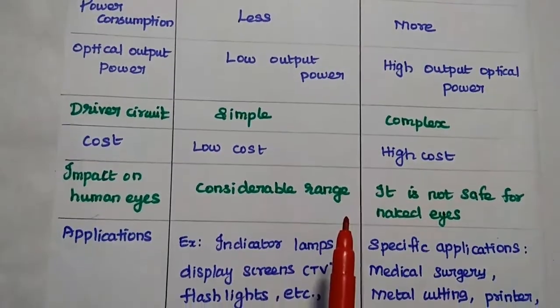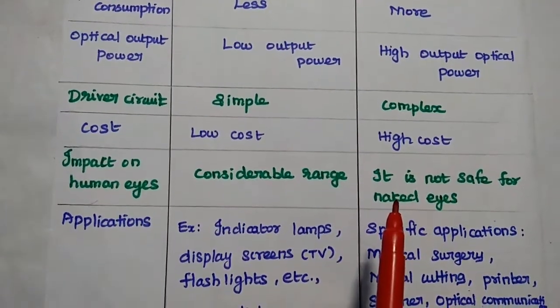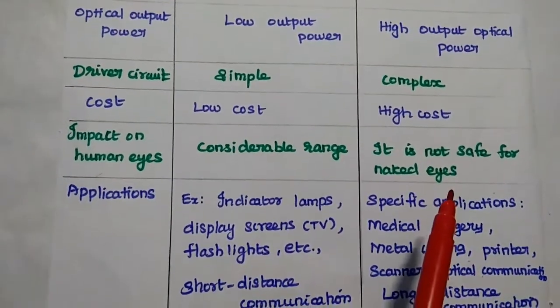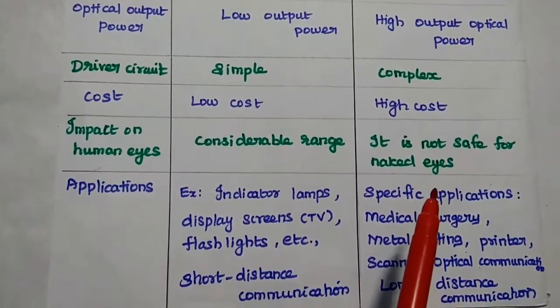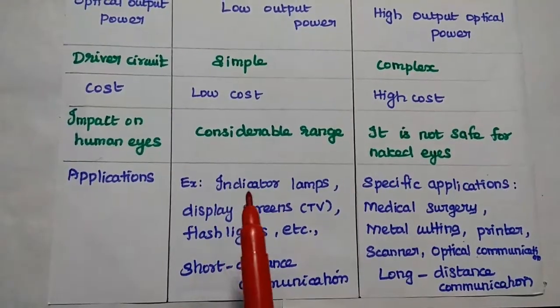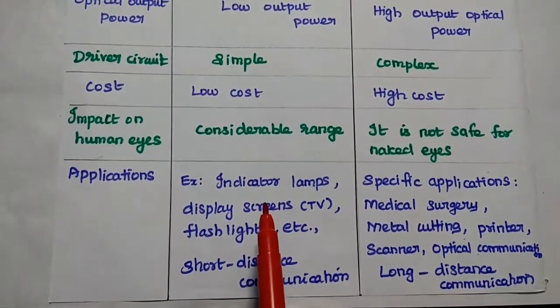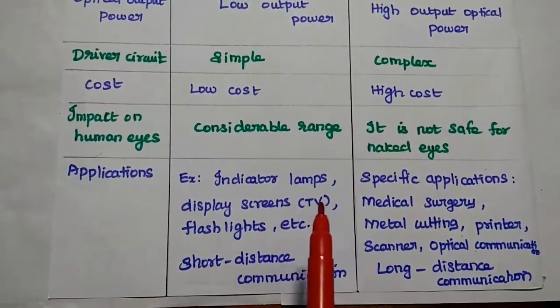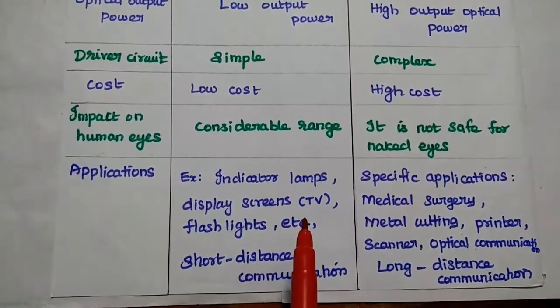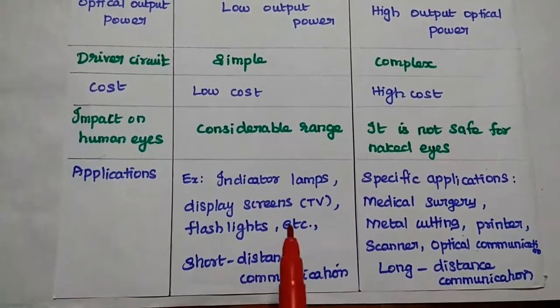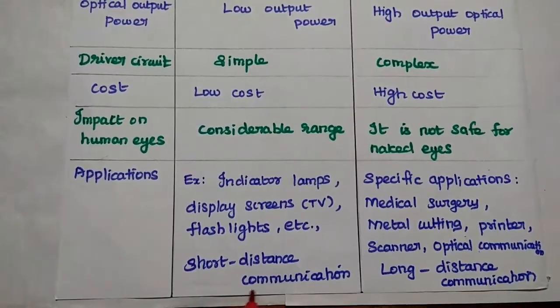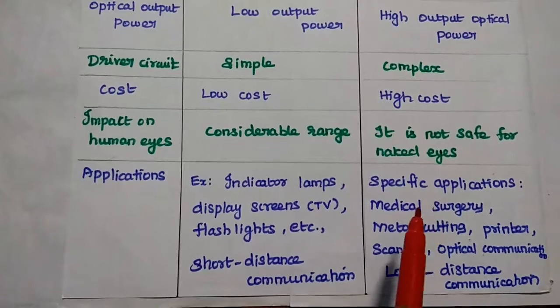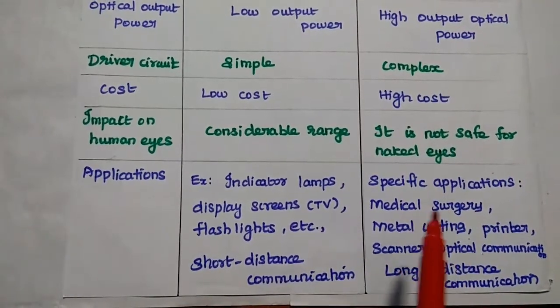The impact on human eyes: LED is in the considerable range, but laser is not safe for naked eyes. We have to be careful with laser. Applications of LED: widely used for commercial applications like indicator lamps, display screens, especially in TV, flashlights, etc. In terms of communication, it is used for short distance communication.